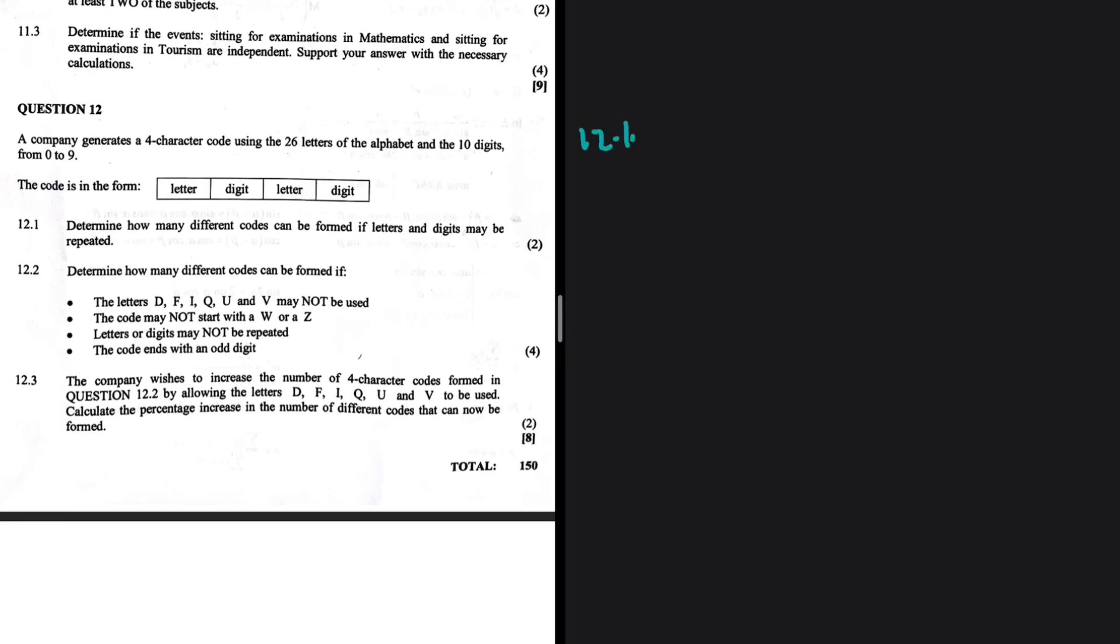For 12.1, we are supposed to find the total number. The question says determine how many different codes can be formed if letters and digits may be repeated. So we have letter, digit, letter, digit. How many letters do we have? We have 26. And how many digits do we have? We have 10, but repetition is allowed.